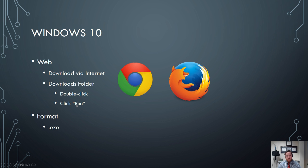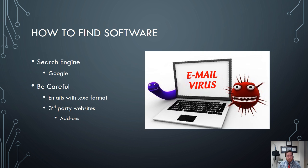The difference between downloading a regular Word document versus downloading a new program is that the new program is going to be in .exe format. The .exe format is unique to Windows, so if you ever see .exe, you know that you're going to be downloading a new program.